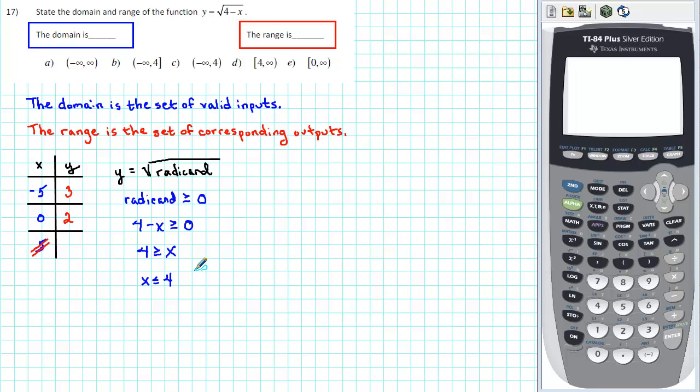To reinforce this numerically and graphically, we can use our graphing calculator. Go to y equals and enter the square root of 4 minus x. To create a table of values, go to table set, which is second window. Let's start at negative 5, and instead of incrementing by 5 like we did earlier, let's increment by 1. To view the table, press second and then graph.